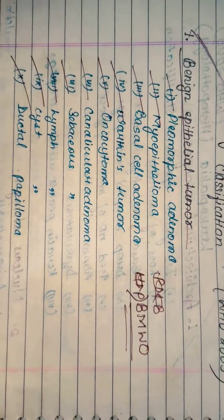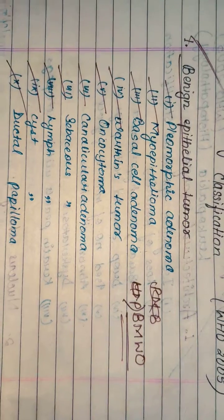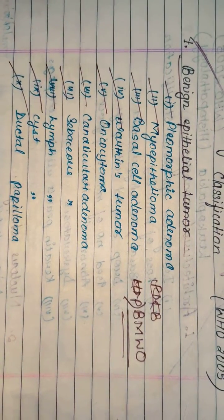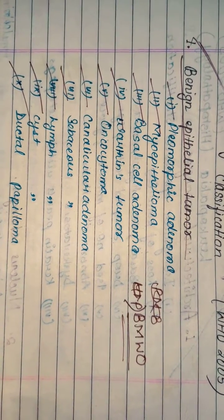Salivary gland tumor is mainly divided into two parts: benign and malignant. One by one, we can discuss all these. First of all, benign epithelial tumor.